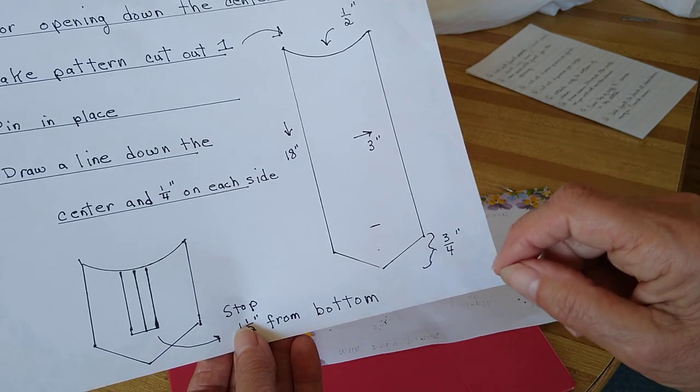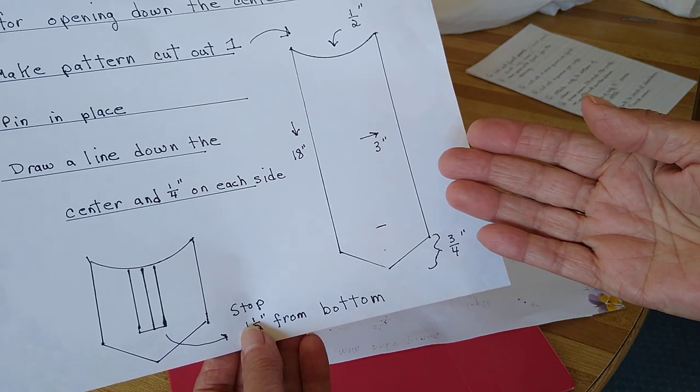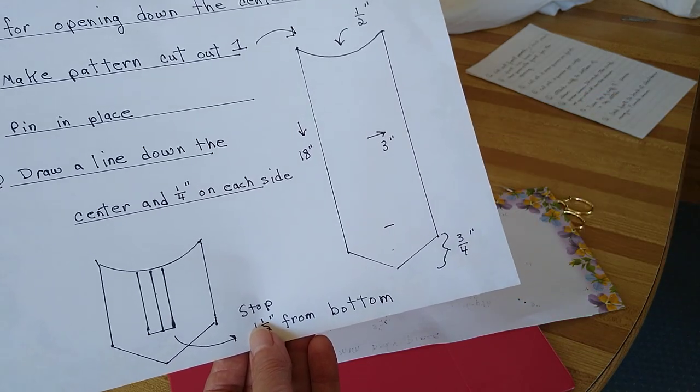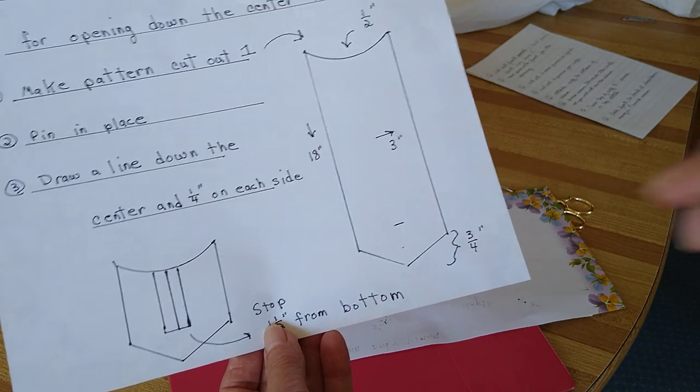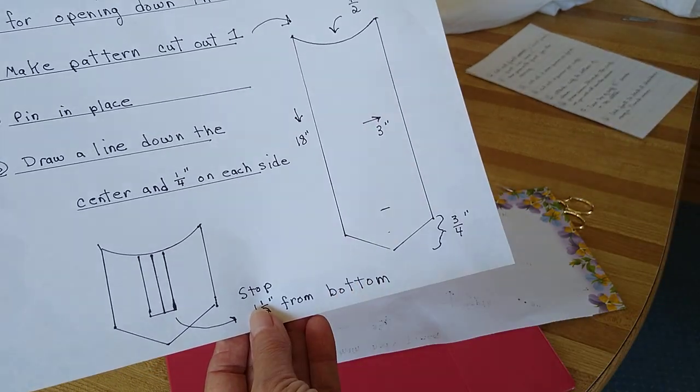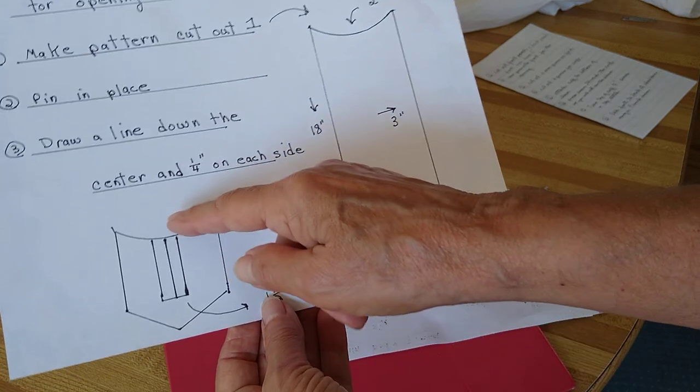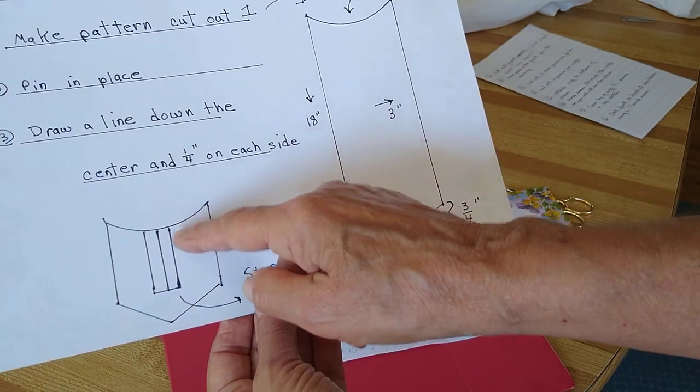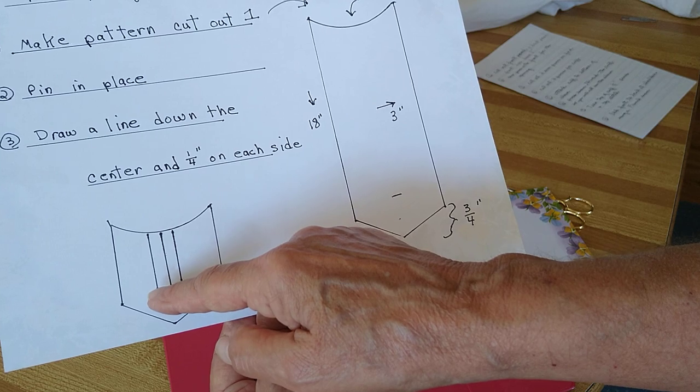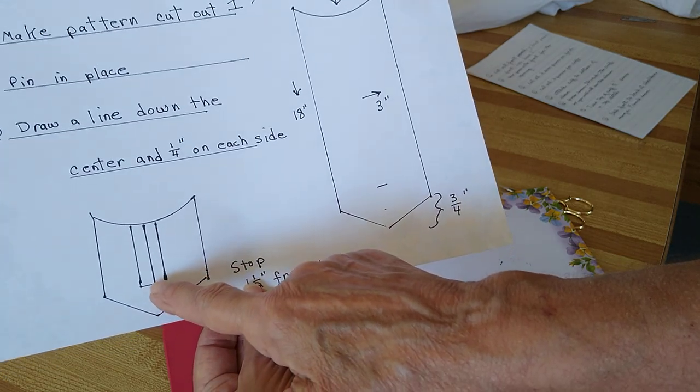You're going to be taking this pattern piece and cutting it out of linen, pin it into the center of the neckline front, and then you're going to draw a line down the center and a quarter inch on either side one and a half inches from the bottom.